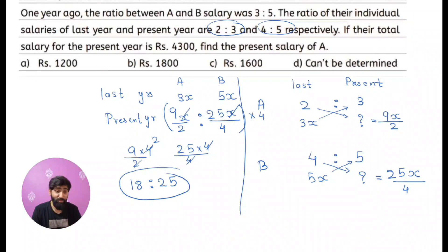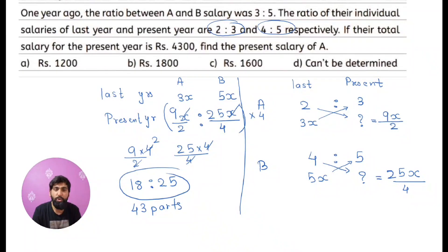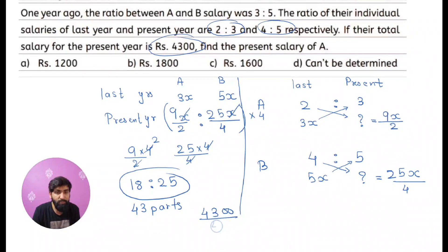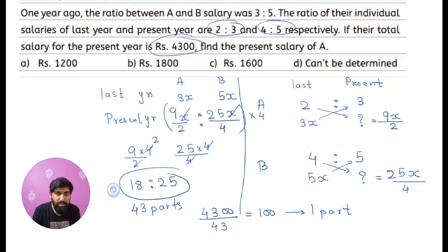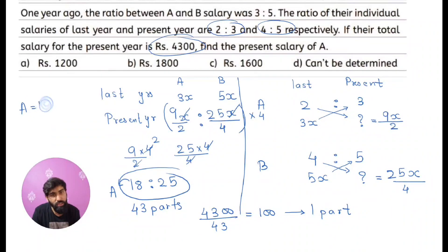The total salary must be divided in this ratio. There are 18 + 25 = 43 total parts. The total salary is ₹4300, so dividing 4300 by 43 gives 100 — that is the value of one part. The present salary of A is 18 parts, so 18 × 100 = ₹1800. That is option B.